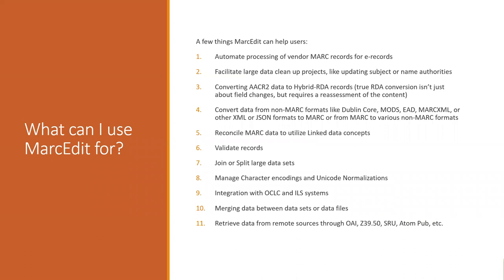You can validate records — validating structure as well as use of the data inside. Splitting, joining large data sets, managing character encodings, which I will talk about because it's important, especially for new folks using MarcEdit, to understand how Unicode data is used within MarcEdit and how it gets passed back into your ILS systems, because there are a number of implications to that. Integration with OCLC and other ILS systems — for folks using Alma and other systems where traditionally you might need a VPN or be on your local network, Alma's APIs are a lot more open. Merging between two data sets and also the ability to retrieve data remotely, either from OAI, Z39.50, SRU, AtomPub — a variety of different formats MarcEdit supports to collect data and pull it into your record set for editing and then loading into catalogs.